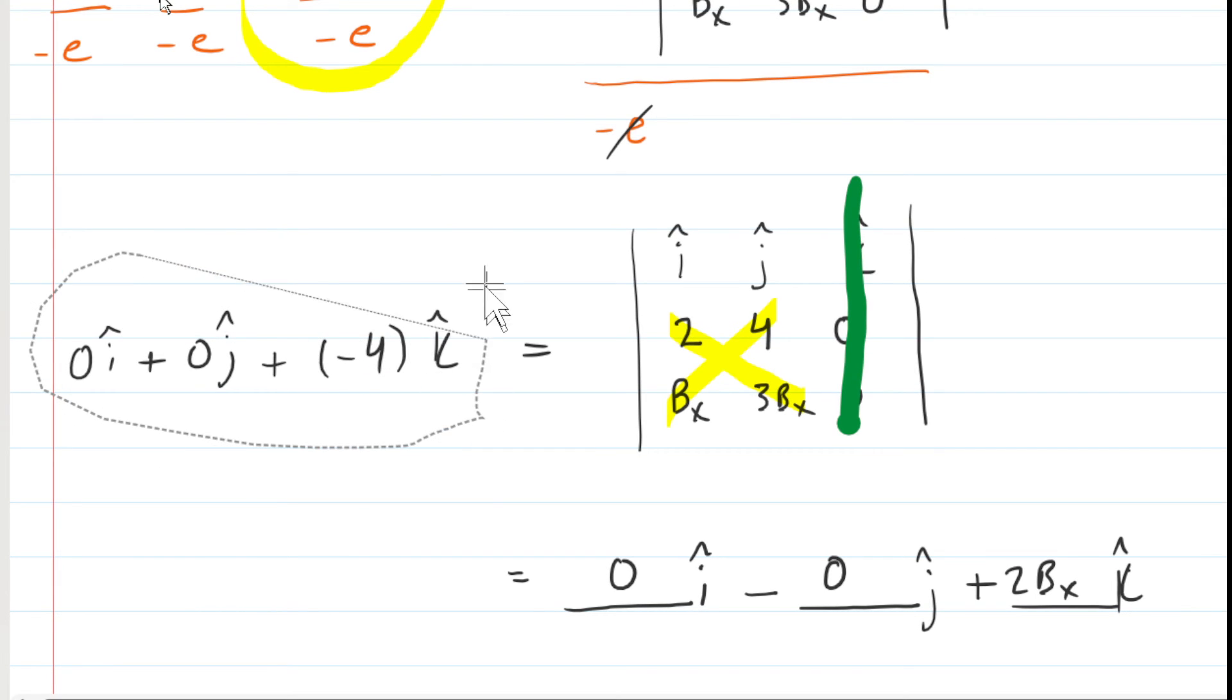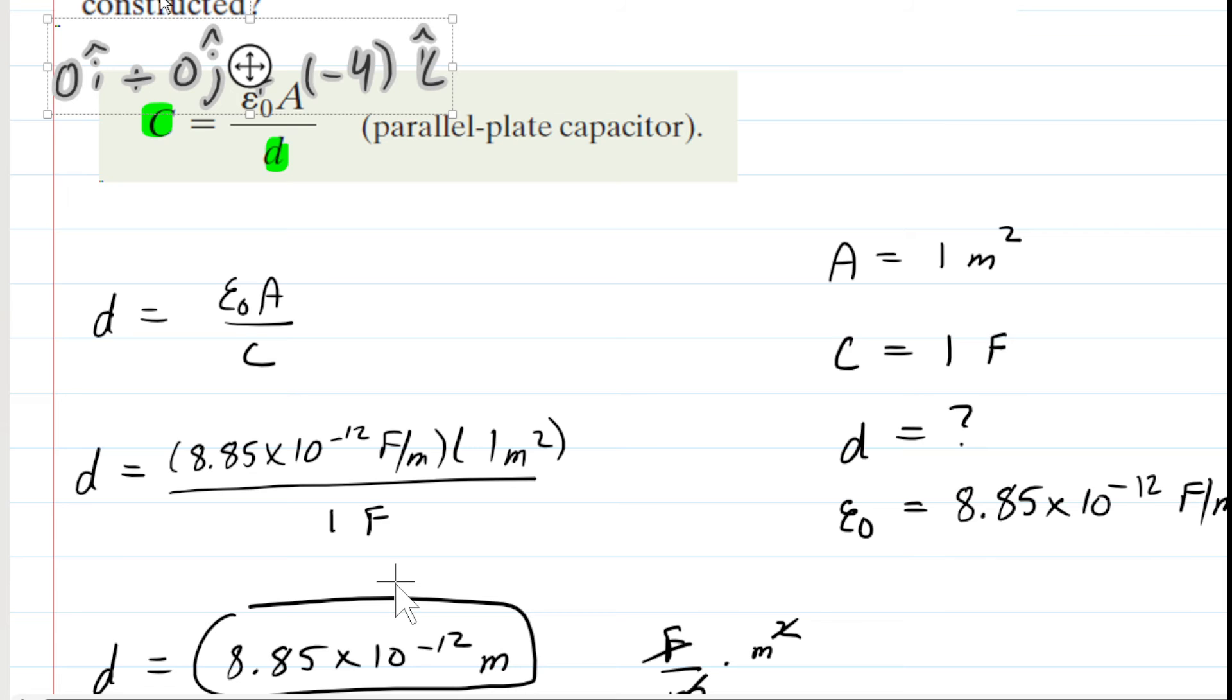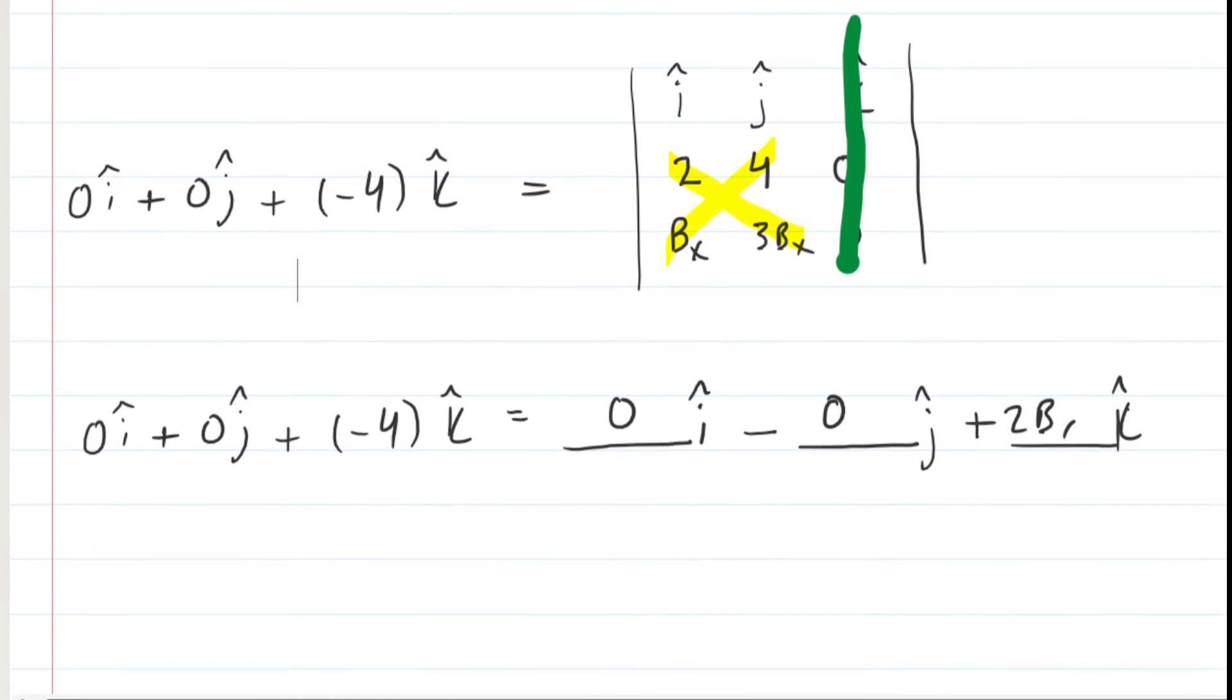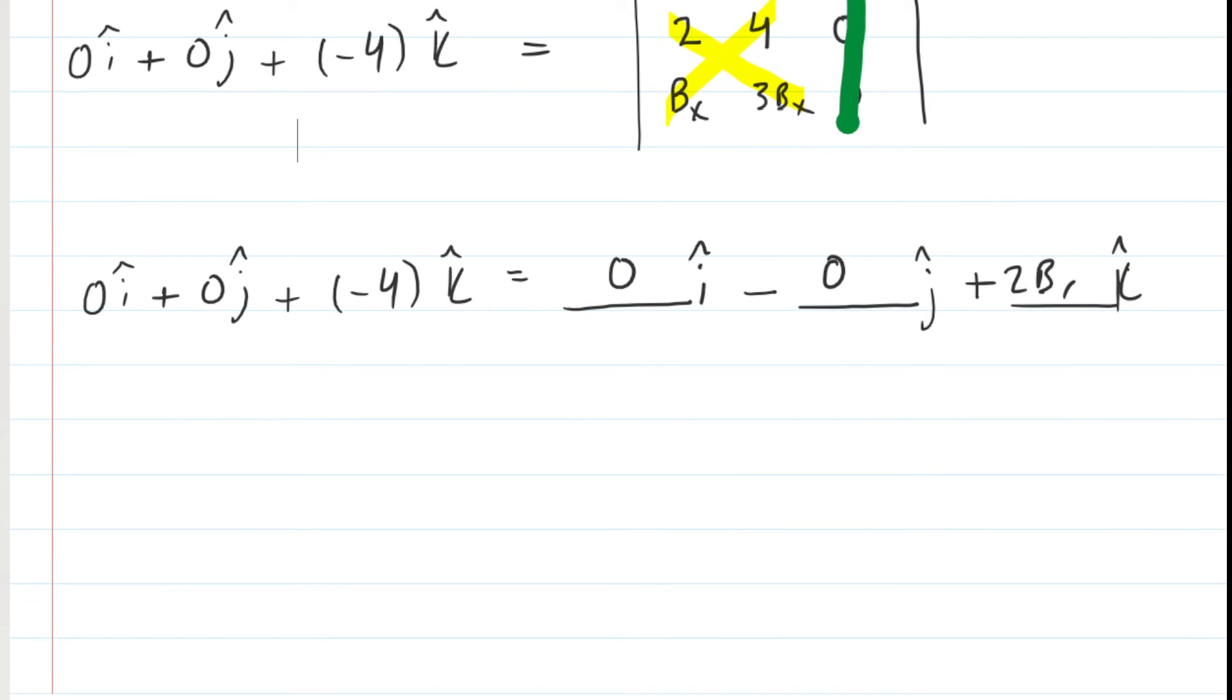And then over here on the left-hand side, we still have the same components. So we'll just copy and paste that. So now we just take a look at things, and they kind of line up. You can see 0i-hat is equal to 0i-hat. That makes sense. 0 j-hat is equal to 0 j-hat. Again, that should make sense. And now we take the k-hat components on each side, and we set them equal to each other. So we set negative 4 equal to the 2bx. This should read bx over here.